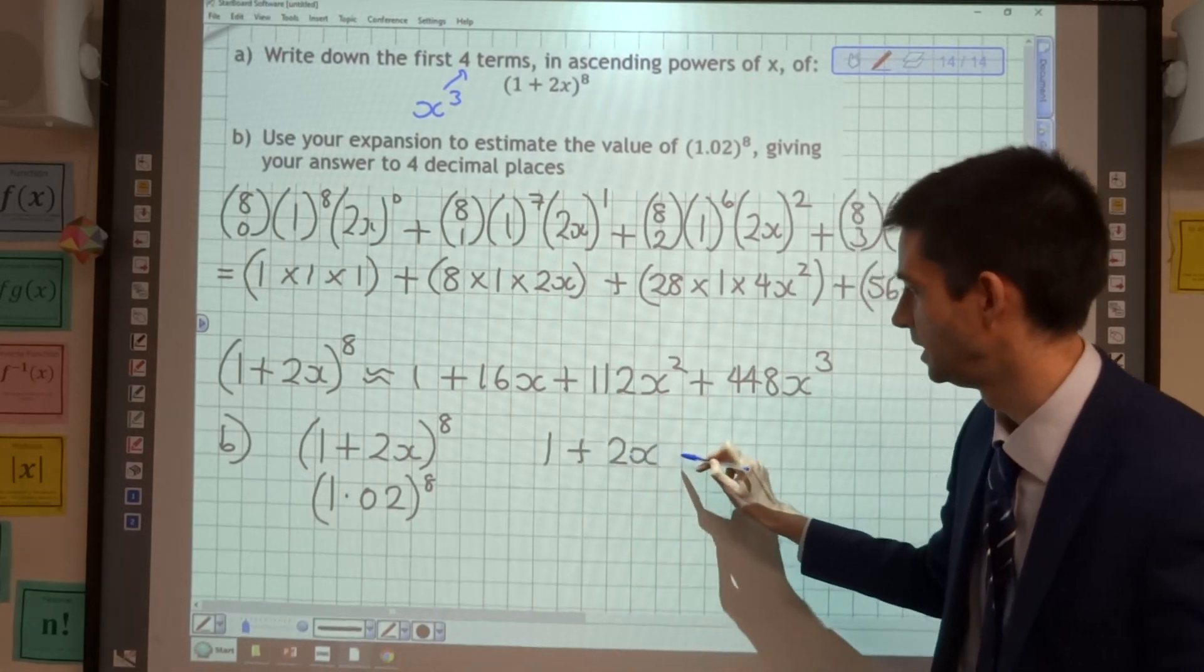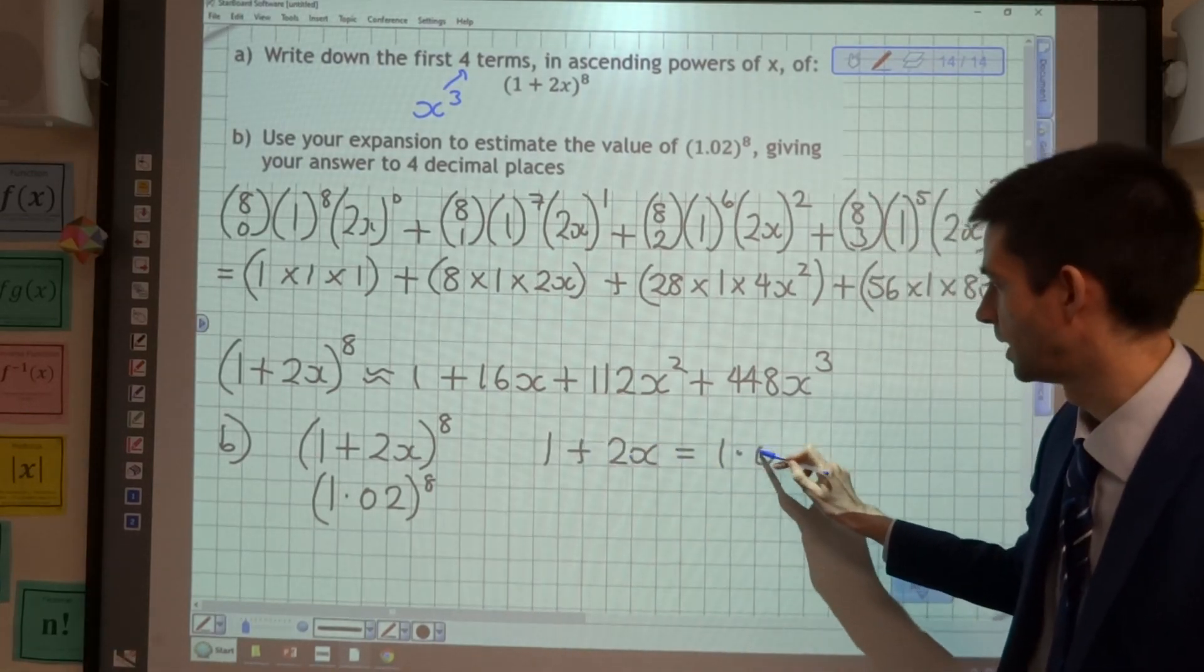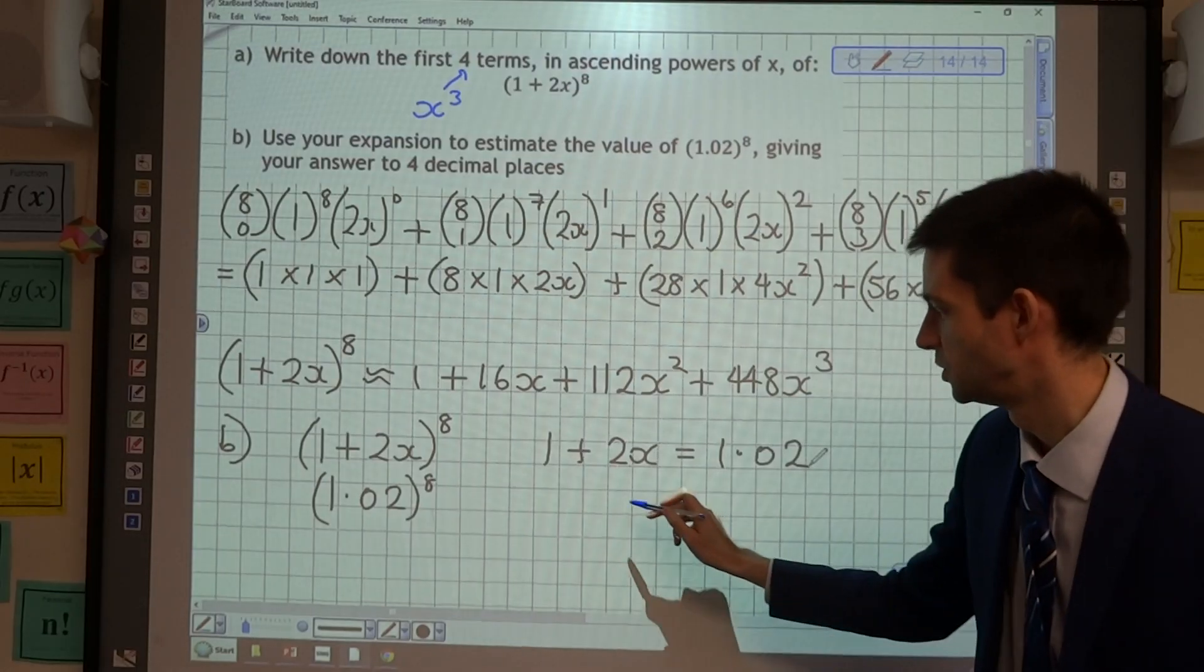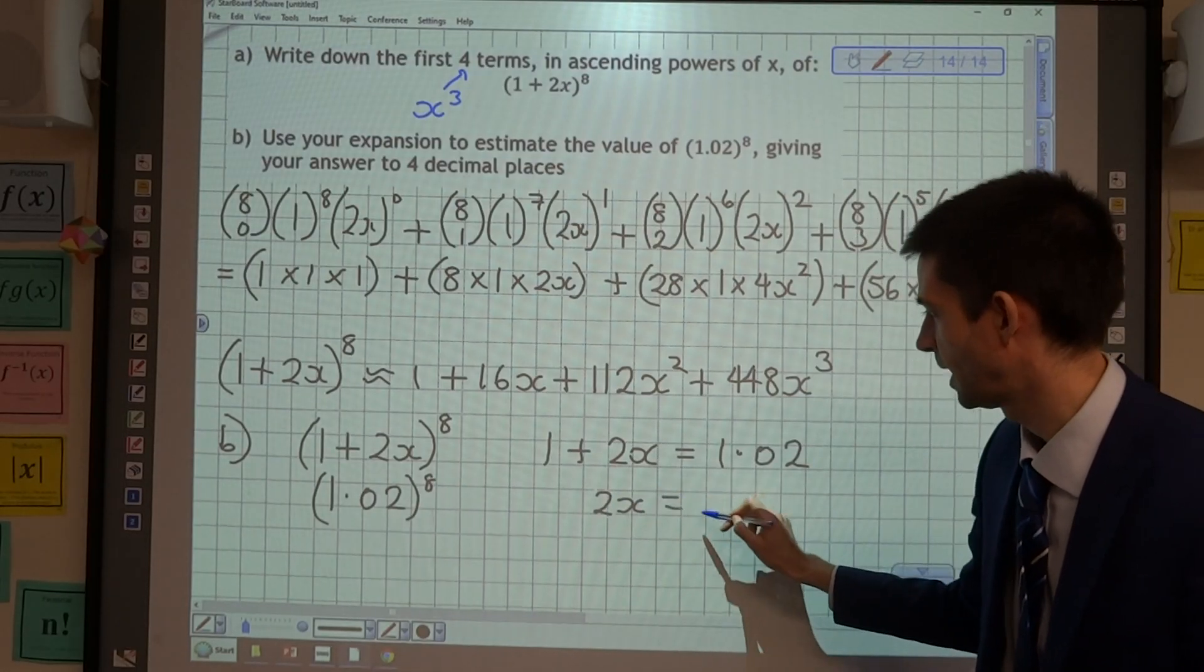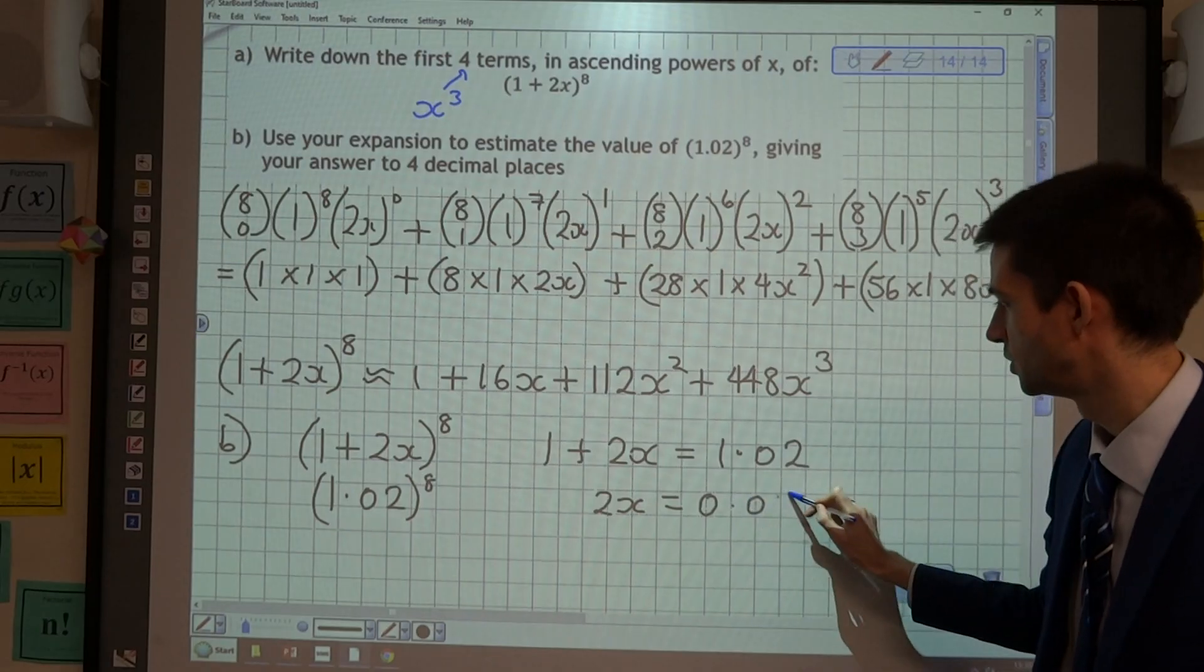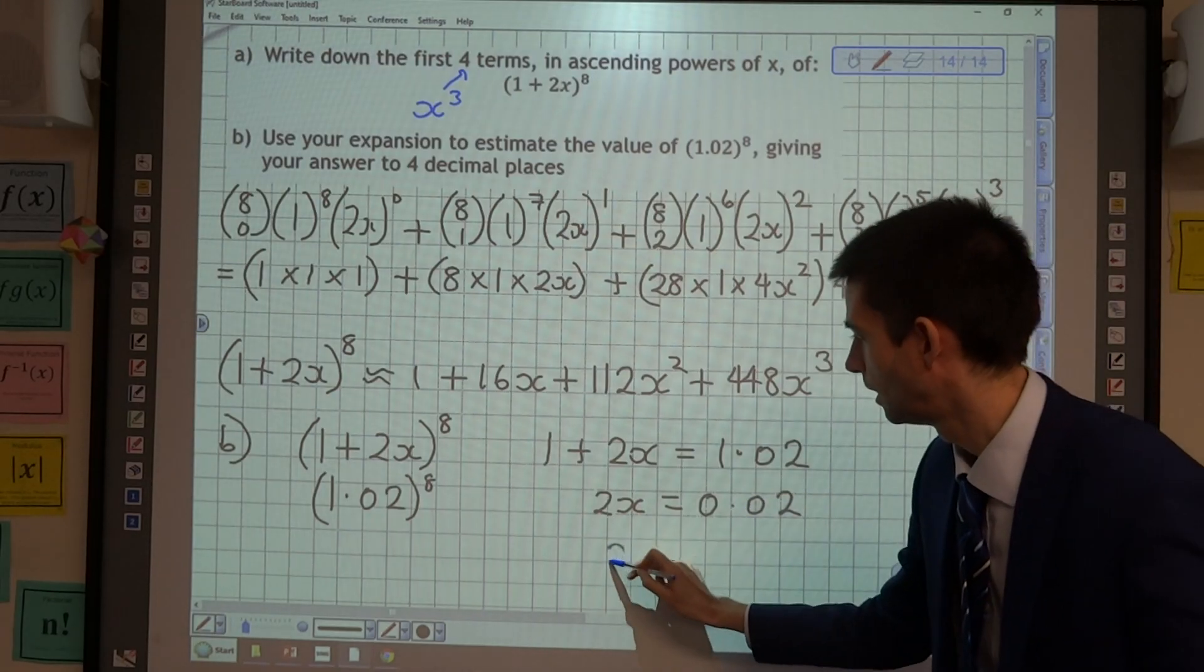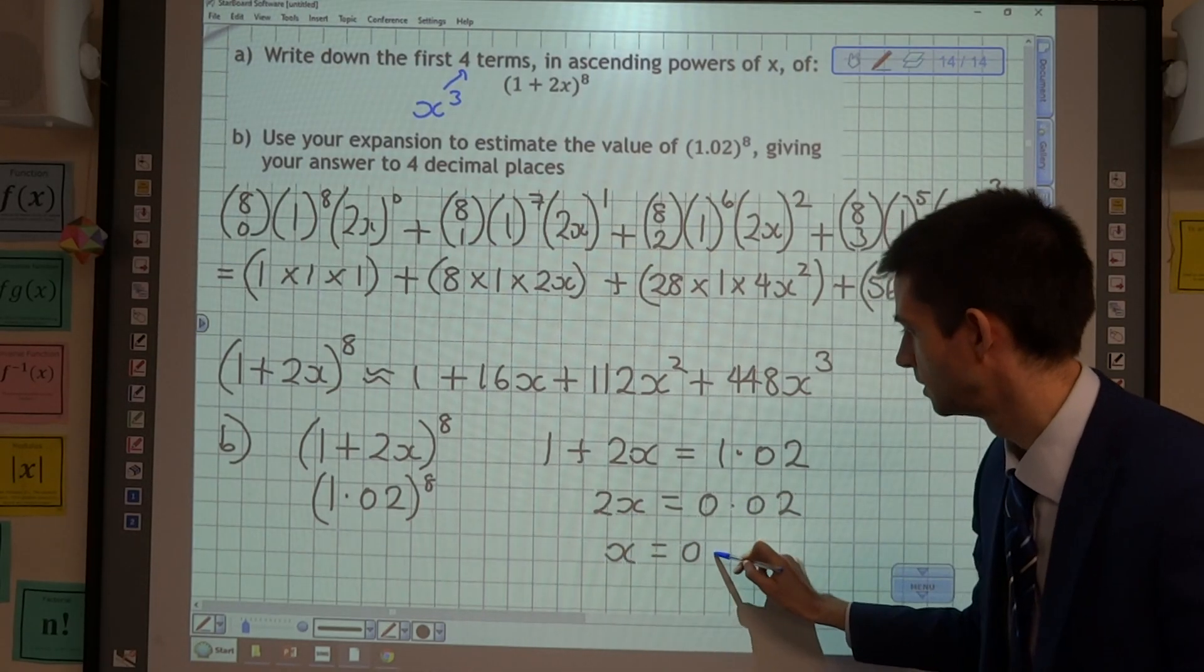So we're going to start by solving the equation 1+2x=1.02. That would mean that 2x would be 0.02, and x would be 0.01.